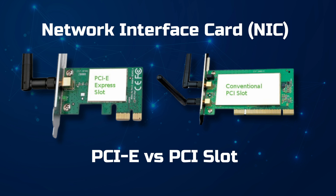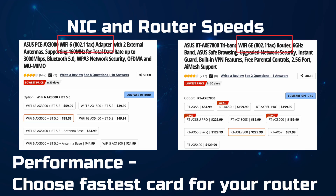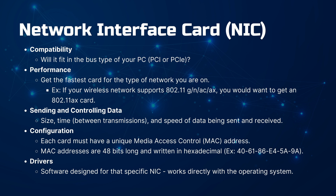Key points about NICs: First, compatibility — ensure the NIC fits the bus type of your PC, whether PCI or PCI Express. Second, performance — choose the fastest card suitable for your network, for example an 802.11ax card for a network supporting 802.11g, n, ac, or ax. NICs send and control data efficiently, managing the size, timing, and speed of transmission. Each NIC has a unique 48-bit Media Access Control (MAC) address written in hexadecimal format, known as the physical address. Drivers — software specifically designed for the NIC — must be installed and kept up to date to function properly.